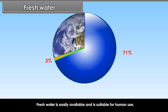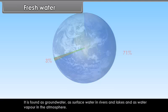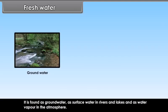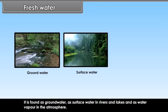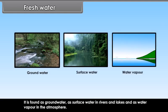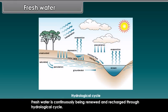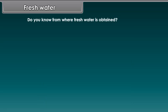Fresh water is easily available and is suitable for human use. It is found as groundwater, as surface water in rivers and lakes, and as water vapor in the atmosphere. Fresh water is continuously being renewed and recharged through the hydrological cycle.